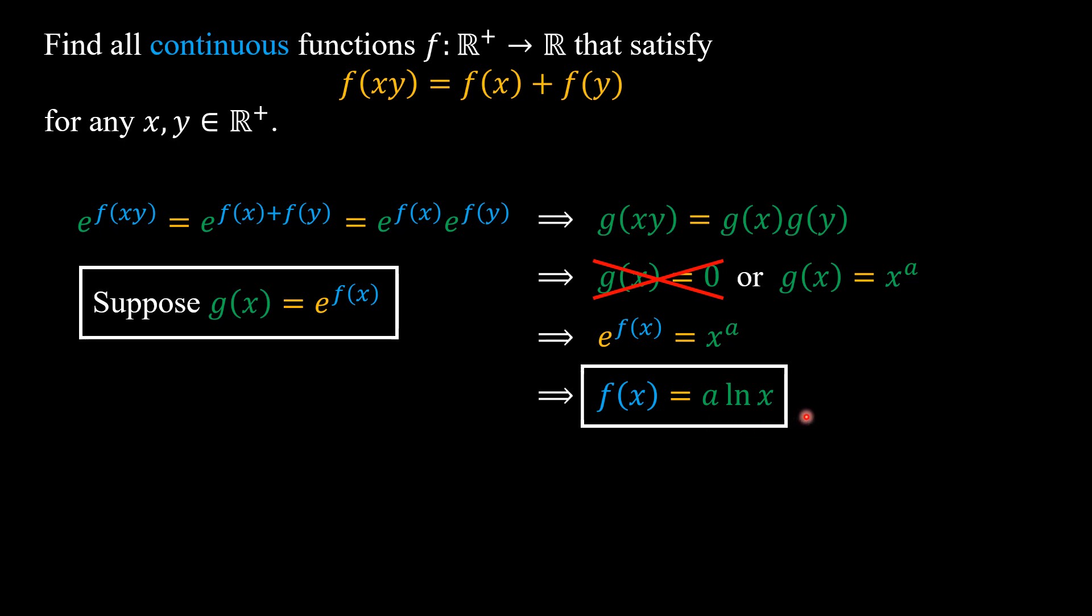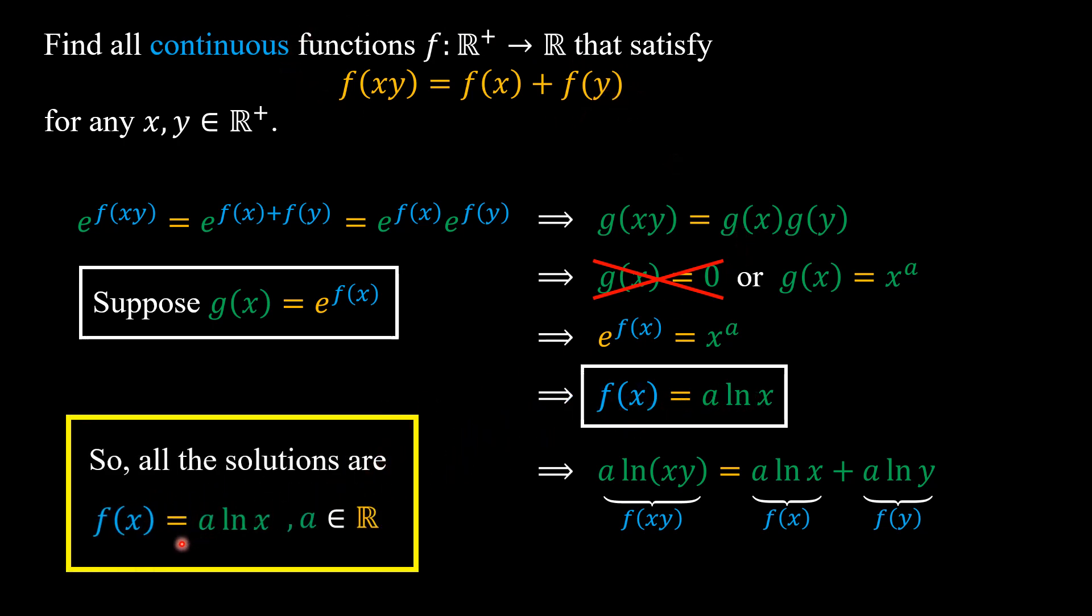And we can check that for any real number a, this function is satisfying the functional equation in the problem. So all the solutions are f(x) equals a times ln(x), where a is any real number. And there we are done.